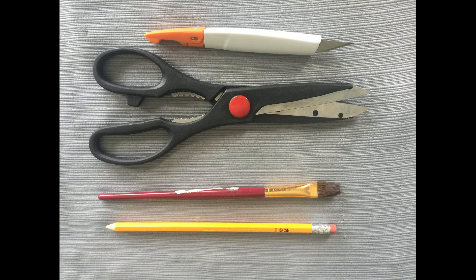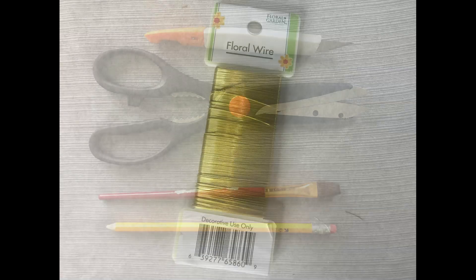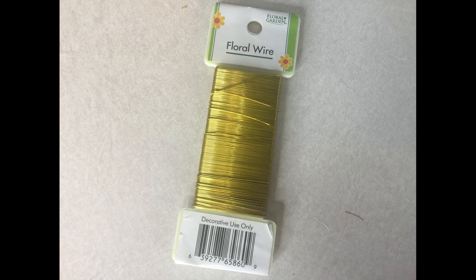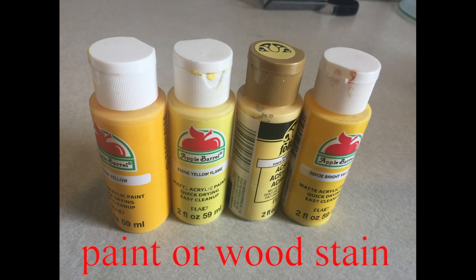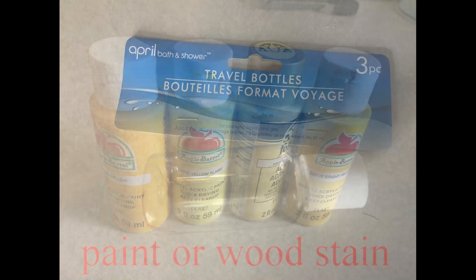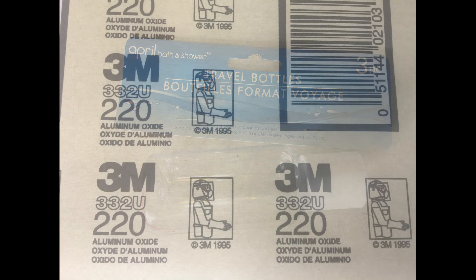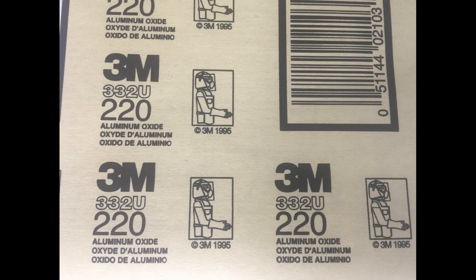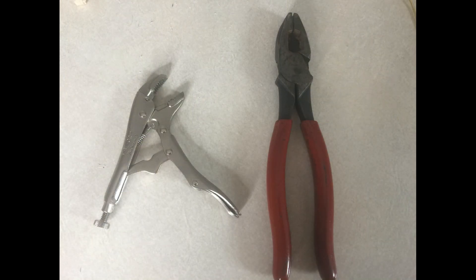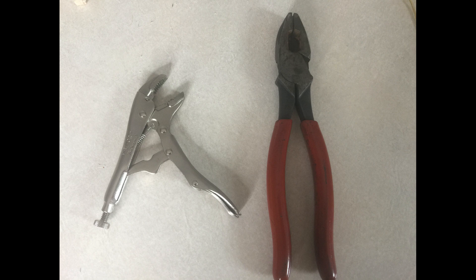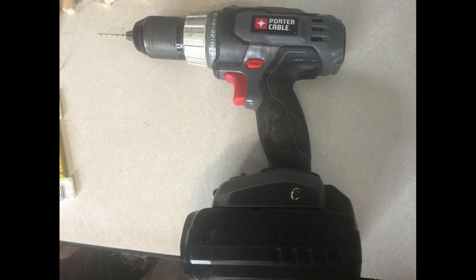You'll need a razor blade, scissors, a paintbrush, and a pencil. You're going to need some floral wire and some paint or wood stain. It's really up to you. And then we're going to use one of these travel bottles from the Dollar Tree as well as a little bit of sandpaper. And you'll need a wrench or something to grab the wire so you can twist it onto the bottle. And you'll need a drill so you can drill a small hole in the sides of it.